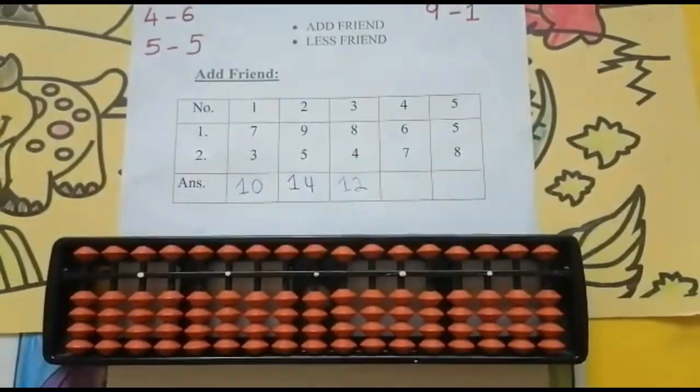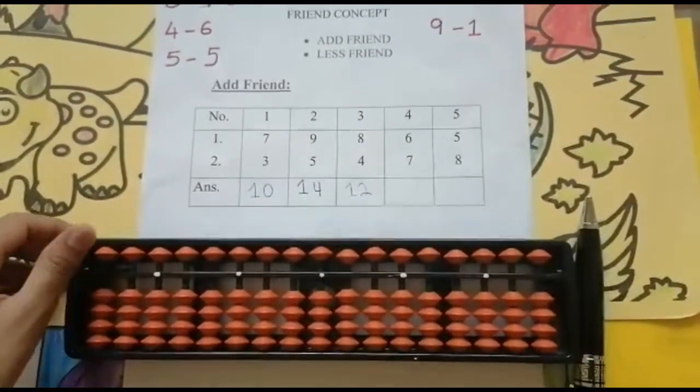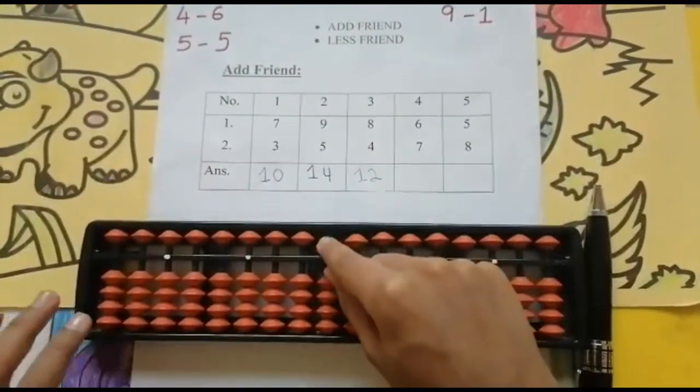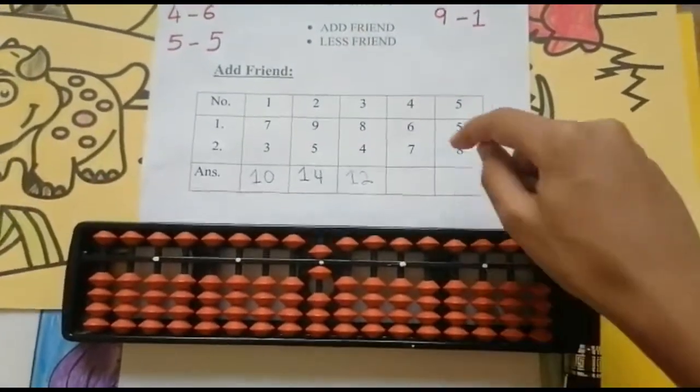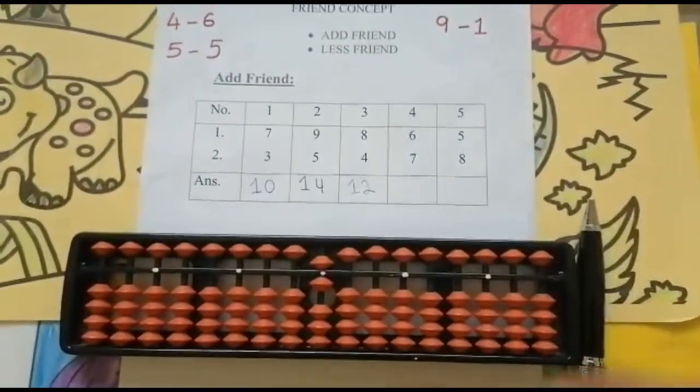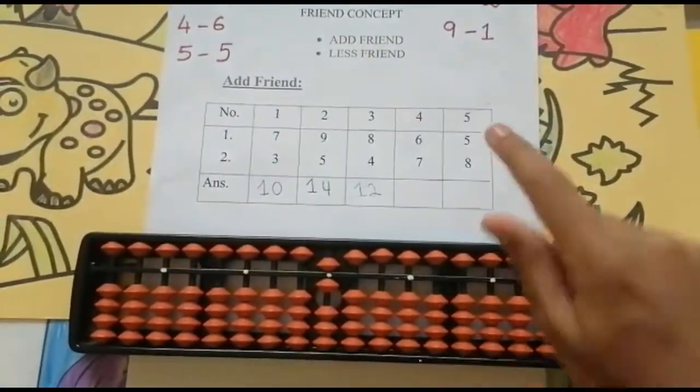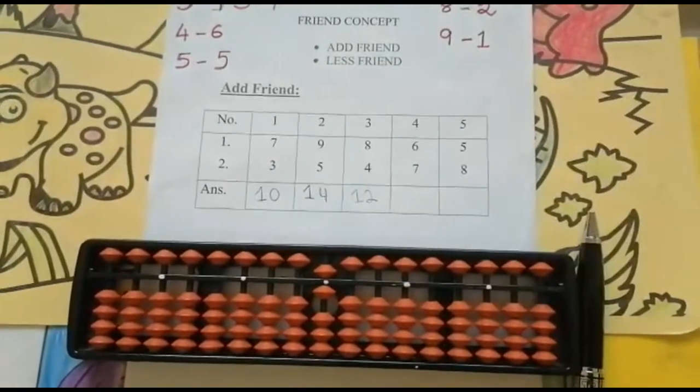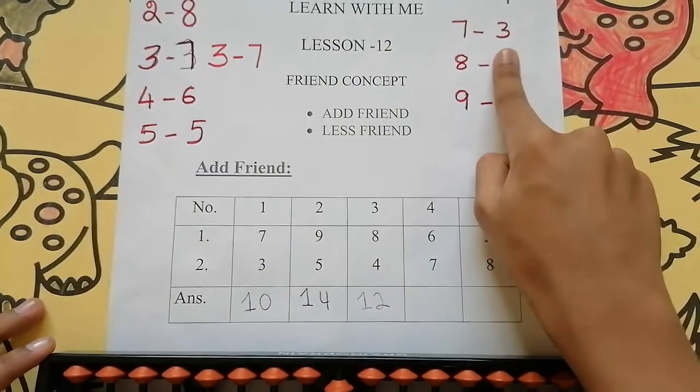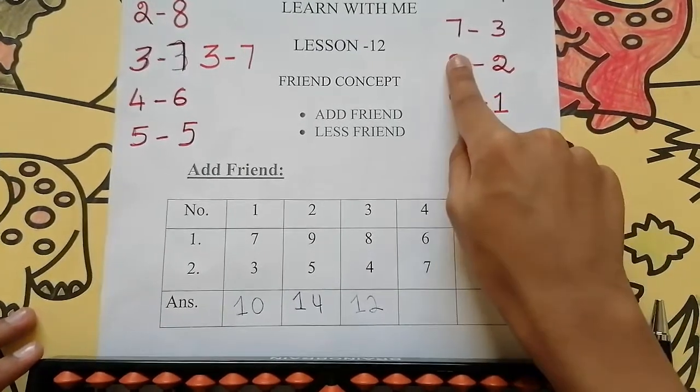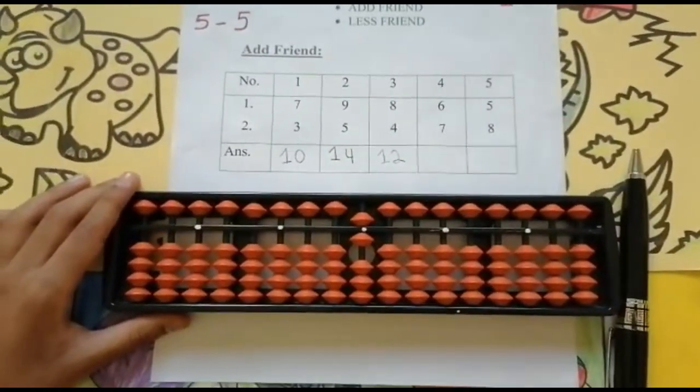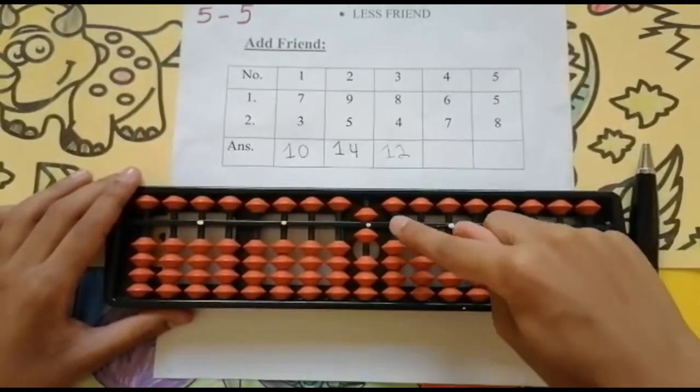The next sum is 6 plus 7. Look above and below, use your four finger and thumb finger. Five, six. Keeping the finger got six. Now add seven, is it possible? Not possible, because I have only three values but I need to add seven values. It is not possible. Now friends concept comes. Friend of seven is three. I will reduce three and then I will add ten. Reducing three is not possible here.